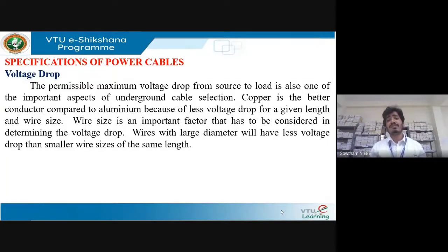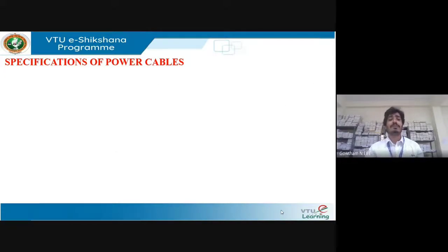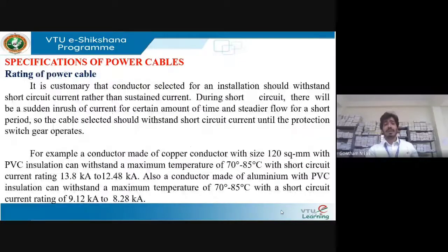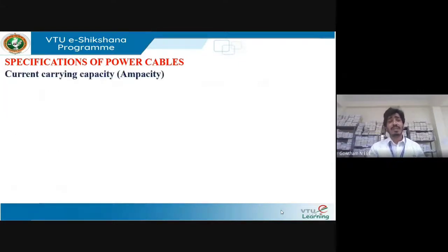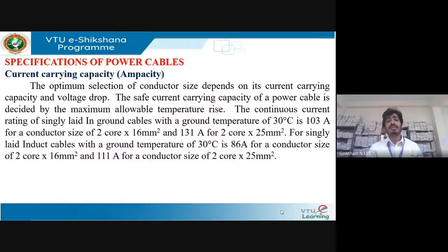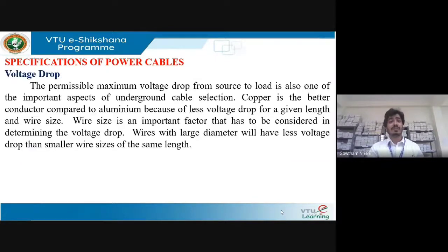In this session, we solved problems finding stress and inter-sheath thickness, then covered the advantages and disadvantages of UG cables compared to overhead lines, and the important specifications: current carrying capacity, voltage drop, and rating. This completes Module 4, which covered corona phenomena, critical disruptive voltage, visual critical voltage, power loss, UG cables, capacitance of single core cables, types of cables, specifications, advantages and disadvantages, and examination problems. Thank you.